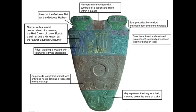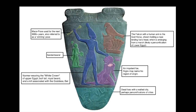We also see the head of the goddess Bat or Hathor. On the back: there's a falcon with a human arm — it could be the god Horus, shown holding a rope binding a foe's head. There are dead foes within a walled city, perhaps a personification of cities. We have Narmer wearing the white crown of Upper Egypt, a bull tail, royal beard, and a kilt associated with the goddess Bat. There's a sandal bearer. And lastly, the mace pose — also referred to as the smiting pose — used for the next 3,000 years.